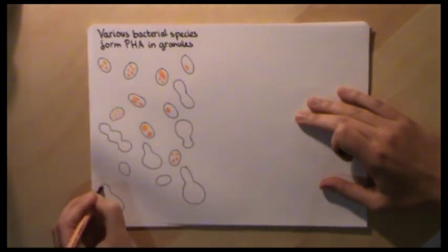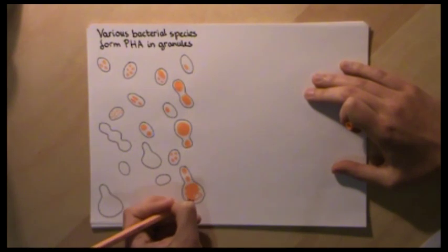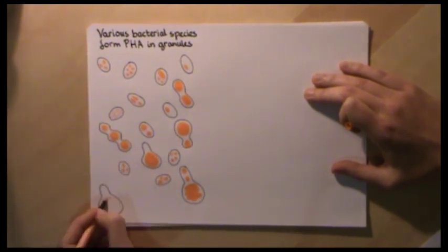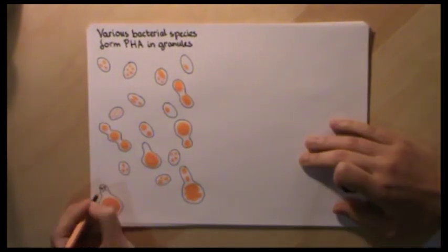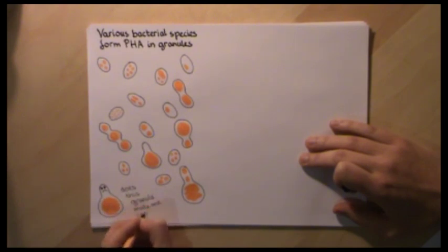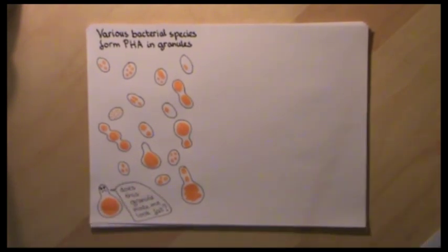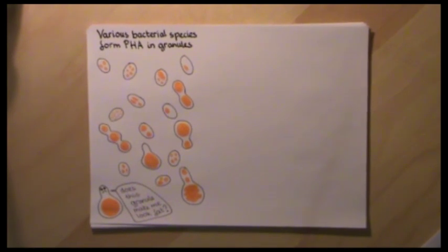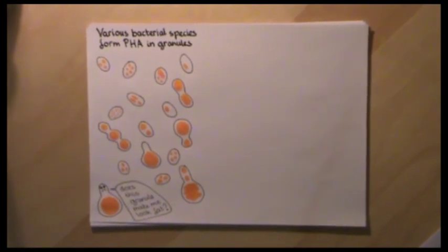So, how do these bacteria make PHA? What happens inside?